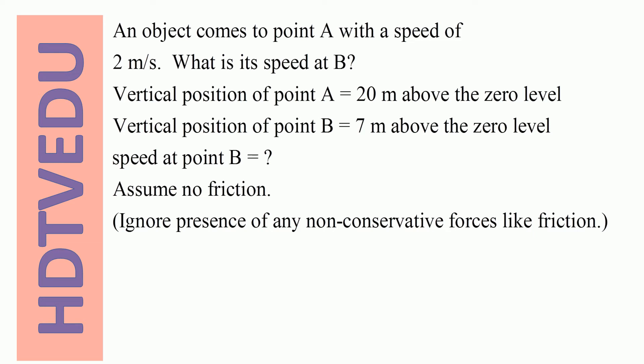An object comes to point A with a speed of 2 meters per second. What is its speed at point B? The vertical position of point A is 20 meters above the zero level, and the vertical position of point B is 7 meters above the zero level. Speed at point B is what we want to find. Assume no friction — ignore the presence of any non-conservative forces like friction.